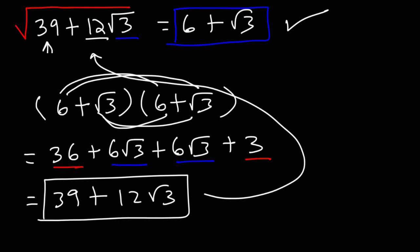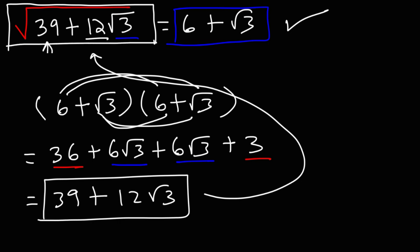So now you know how to simplify a problem that looks like this. If you ever see this on a test, you might be dealing with a perfect square trinomial inside of the radical symbol. Now you know how to quickly test if these numbers fit a perfect square trinomial, so you can factor — or rather simplify — it a certain way.